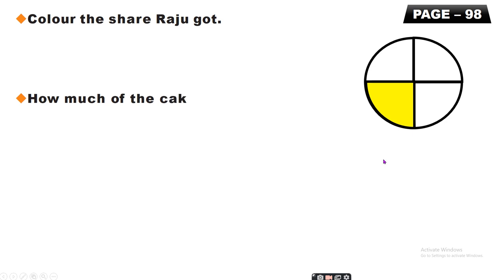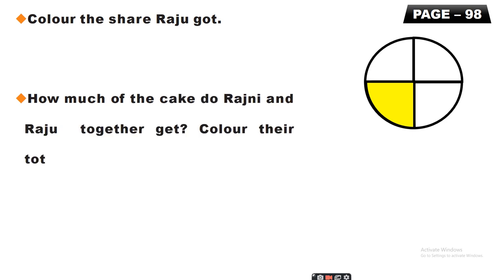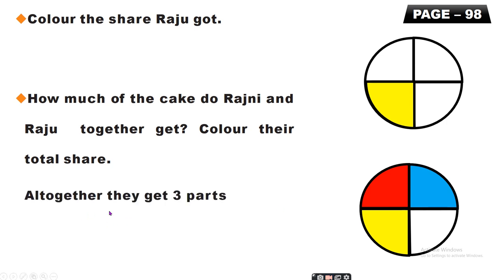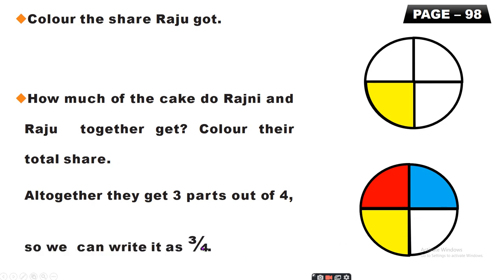Color the share Rajni got. Rajni was having only one part of the cake — that means one-fourth. And how much do Rajni and Raju together get? Color their total share. Rajni had one-fourth and her mother gave her one more share. Together with Raju's share, we colored 3 parts. Now all together they get 3 parts out of 4 — so we write it as 3 upon 4. That means 3 parts out of 4 parts.